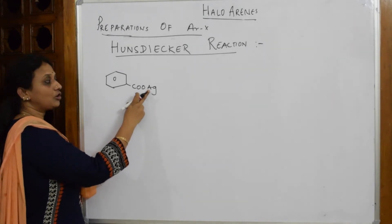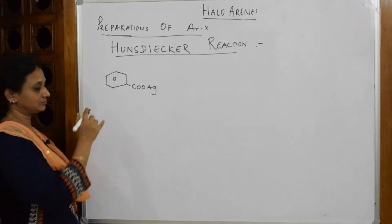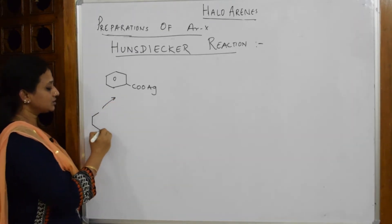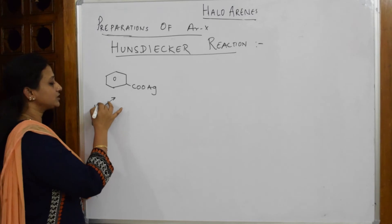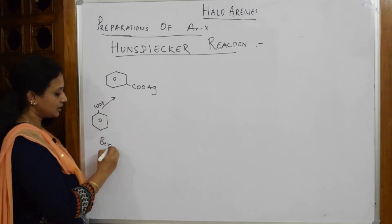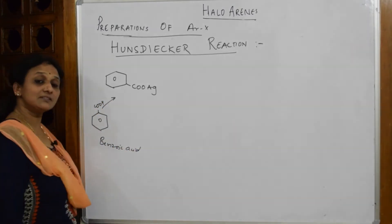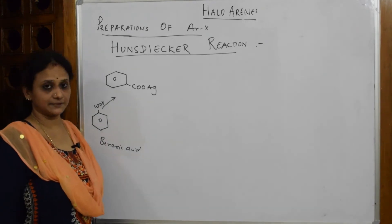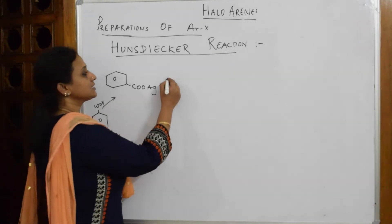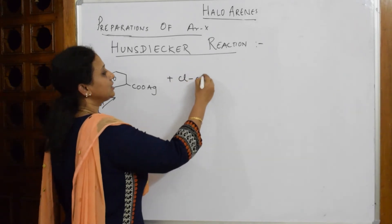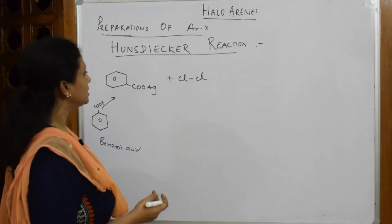The silver salt of benzoic acid — this benzene ring with COOH is benzoic acid. Now, to this silver salt of benzoic acid, suppose I add chlorine — if I have to prepare chlorobenzene — here is what happens.